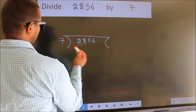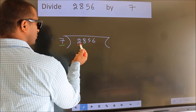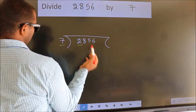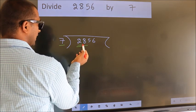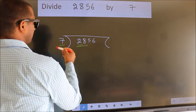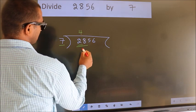Here we have 2. Here 7. 2 is smaller than 7. So we should take 2 numbers, 28. When do we get 28? In the 7 table. 7 fours are 28.